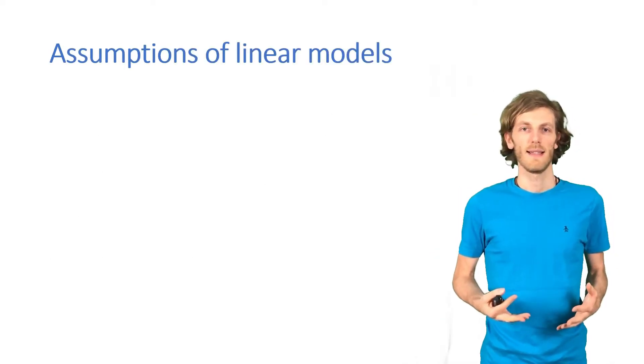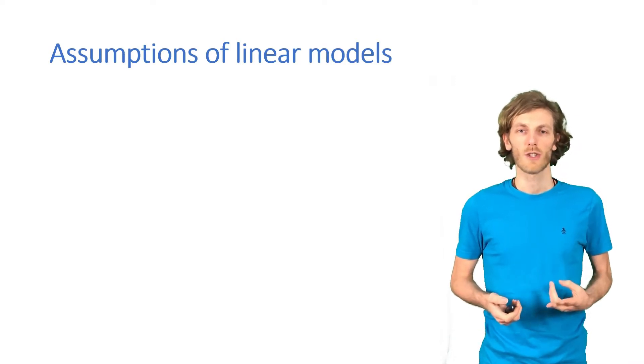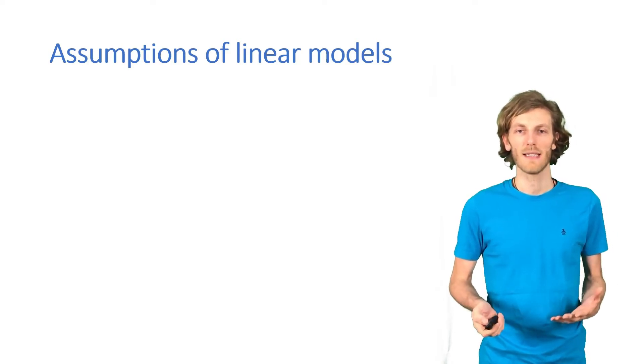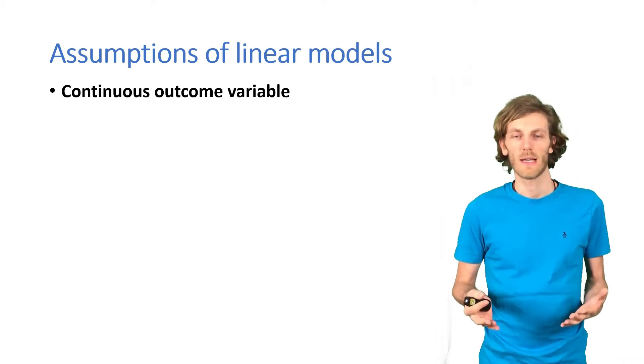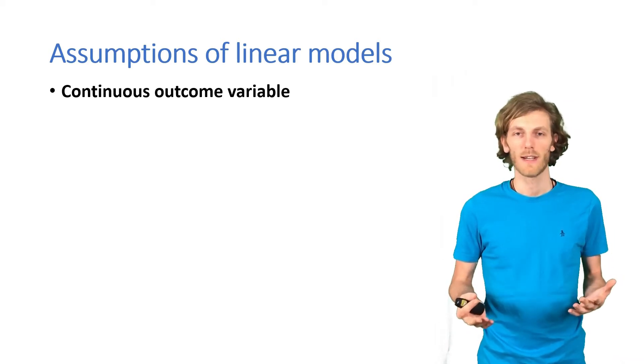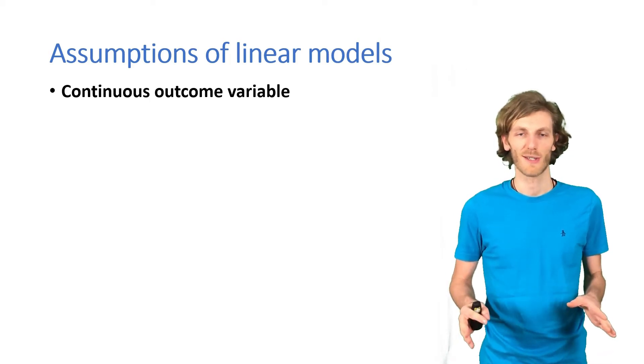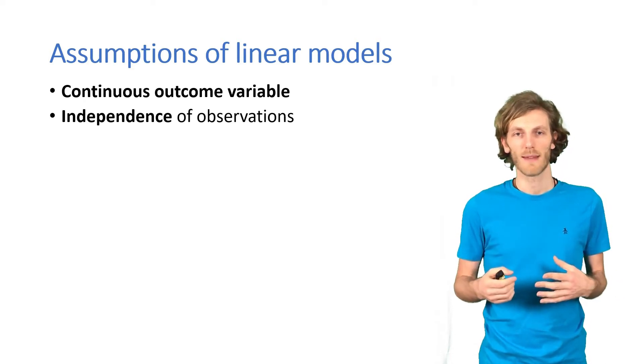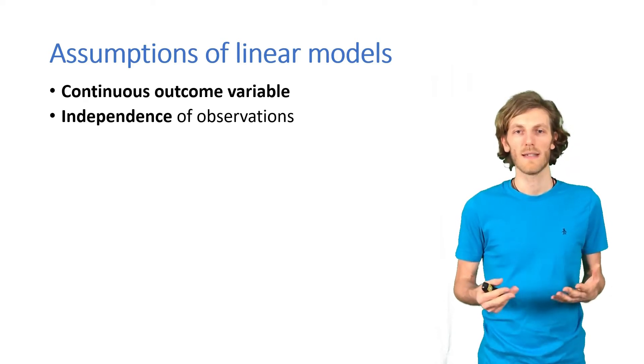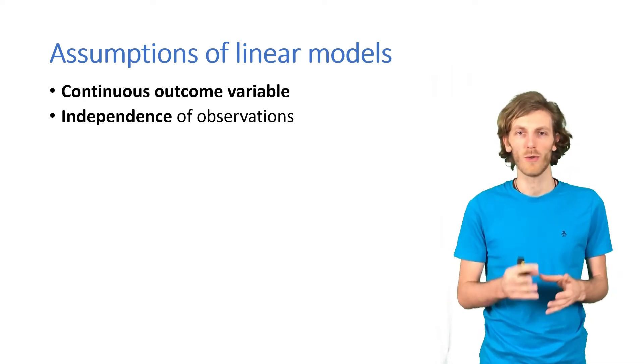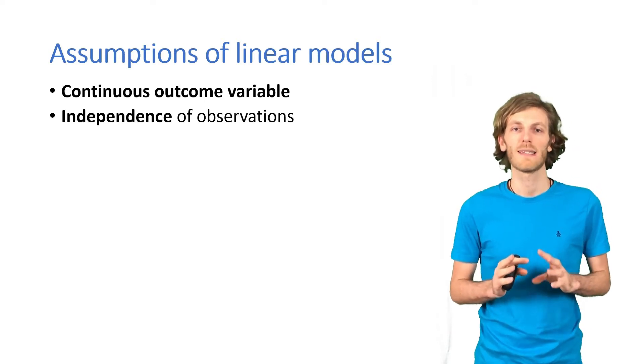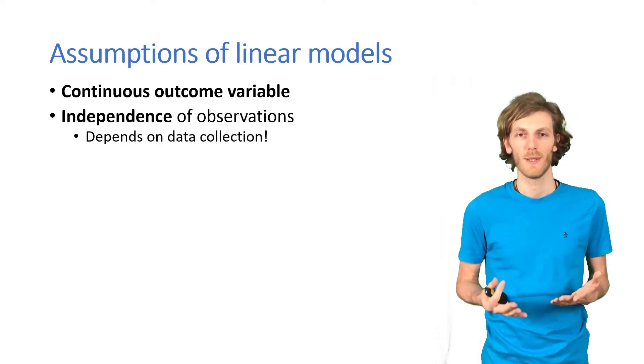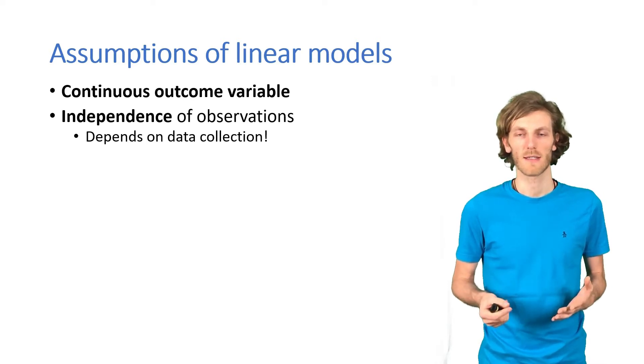So, what are the assumptions behind linear models? Firstly, there are two that we need to think about just when thinking about the data. We need a continuous outcome variable. If we have a categorical outcome variable, linear regression is not going to work. We also need to have independent observations. If we have something like repeated measures, or a time series, or participants who are somehow grouped, we should at least think about doing something like a multilevel model. So, before we even start, those are questions to be answered.